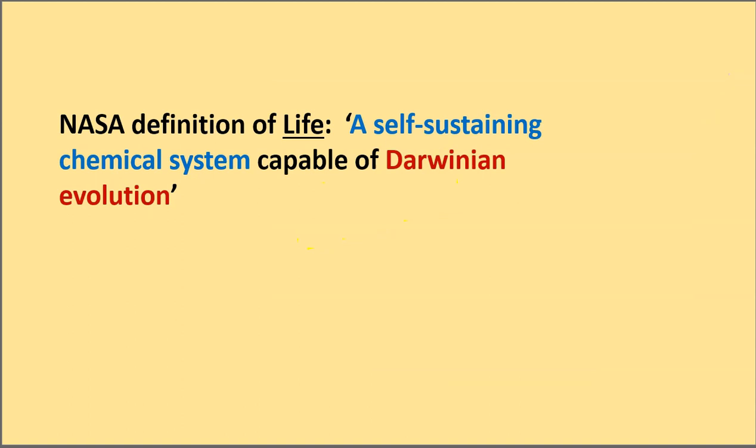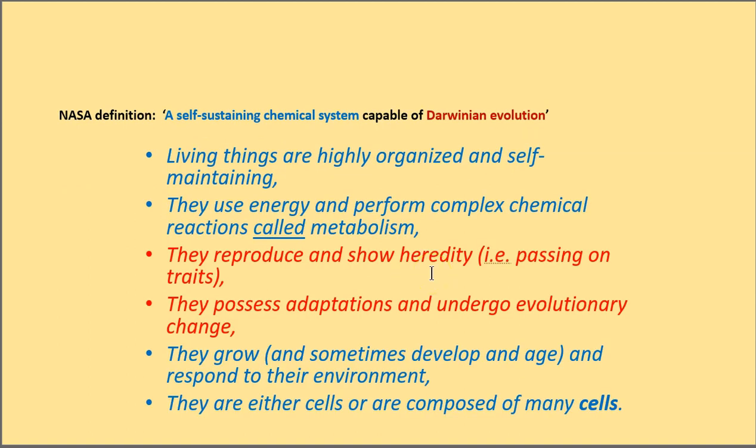NASA has a definition for life. A self-sustaining chemical system capable of Darwinian evolution. If you look at a modern textbook in the chapter where they're talking about life, a lot of textbooks will have this list of characteristics that all living things possess. And you have to have all these characteristics to be understood to be alive. So living things are highly organized and self-maintaining. They use energy, perform complex chemical reactions called metabolism. They reproduce and show heredity. They possess adaptations and undergo evolutionary change. They grow, sometimes develop and age, and respond to their environment. They are either cells or are composed of many cells. So again, there might be lots of objects around the world that have a few of these characteristics. But if you do not have all of these characteristics, you are not said to be alive.